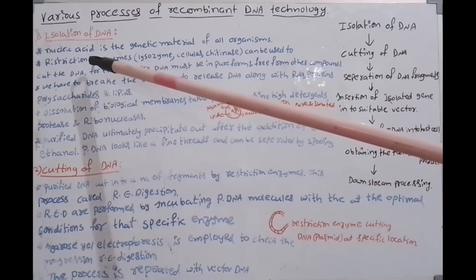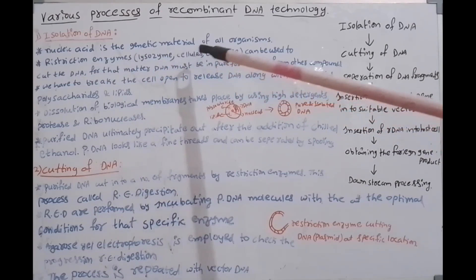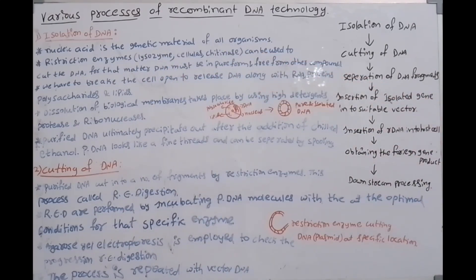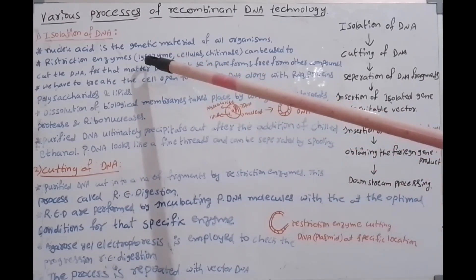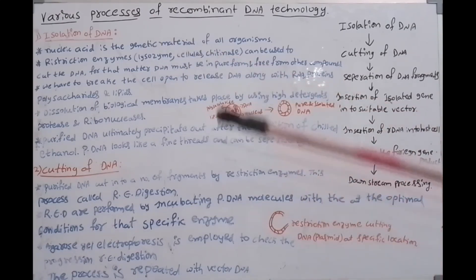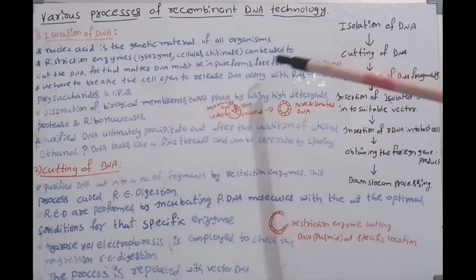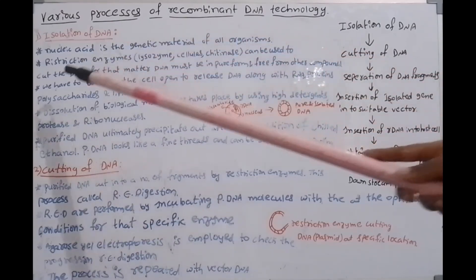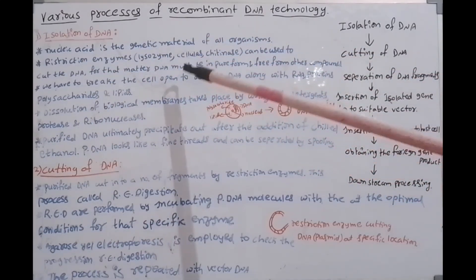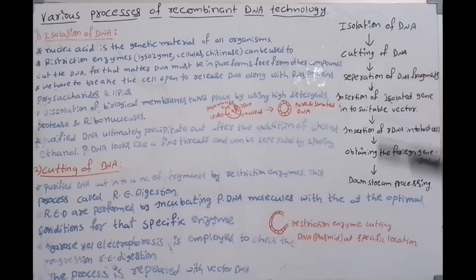Some examples of restriction enzymes: lysosyme, cellulase, and chitinase. Lysosyme cuts the bacterial DNA. Cellulase cuts the plant's DNA and RNA. Chitinase cuts the fungal fragments. These enzymes are used to cut the DNA; for that, the DNA must be in pure form and free from other compounds.